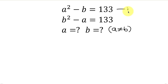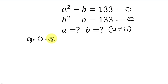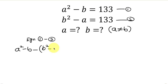We can call this equation 1 and call this equation 2. Our first step will be to subtract equation 2 from equation 1. From equation 1 on the left-hand side we have a squared minus b, minus the left-hand side of equation 2 which is b squared minus a, and this is equal to 133 minus 133.